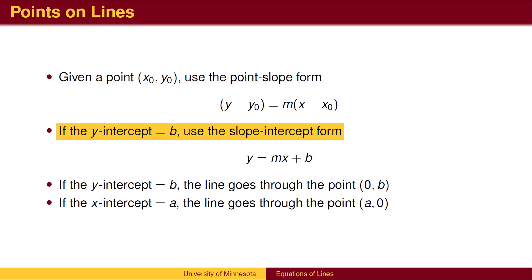If given the y-intercept, we can use the slope-intercept form. Or use the fact that if the y-intercept is b, then the line goes through the point (0,b). In that case, the point-slope form becomes the slope-intercept form.